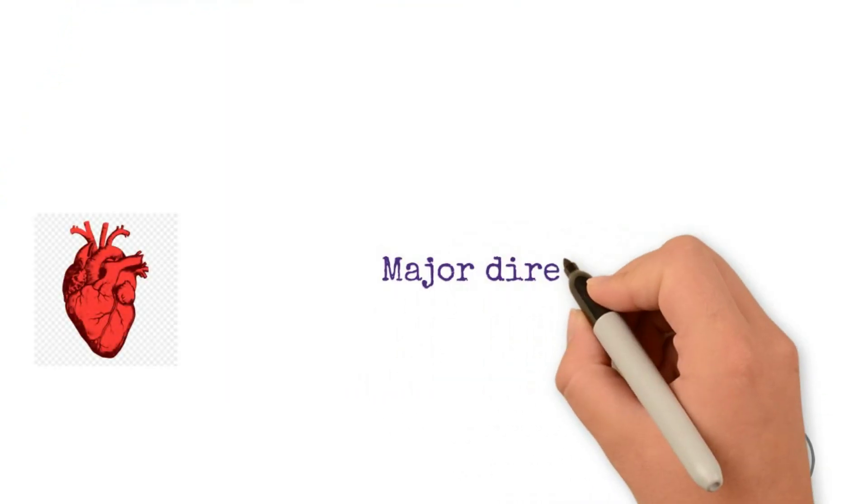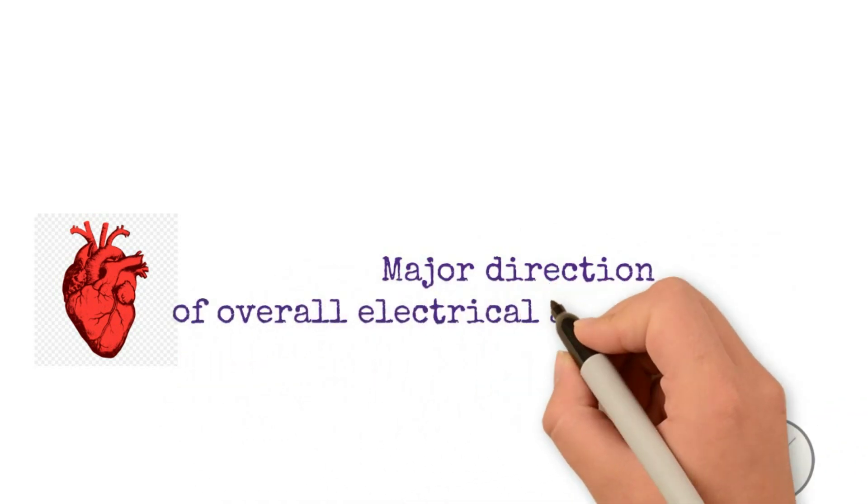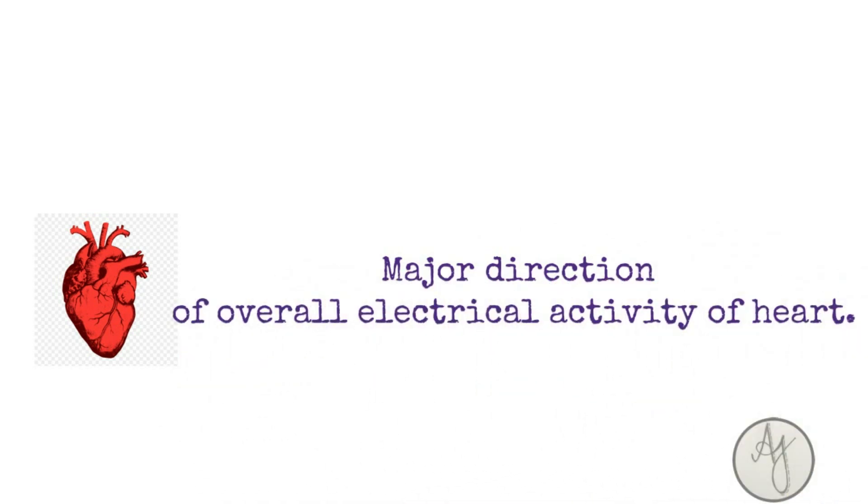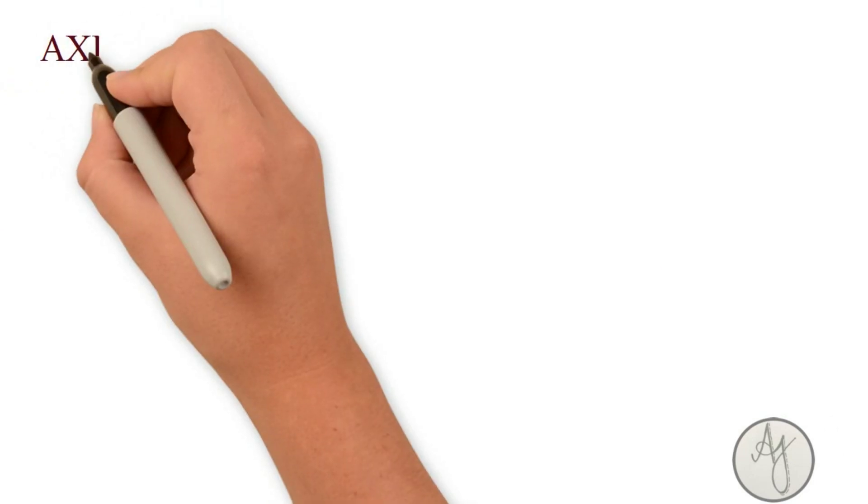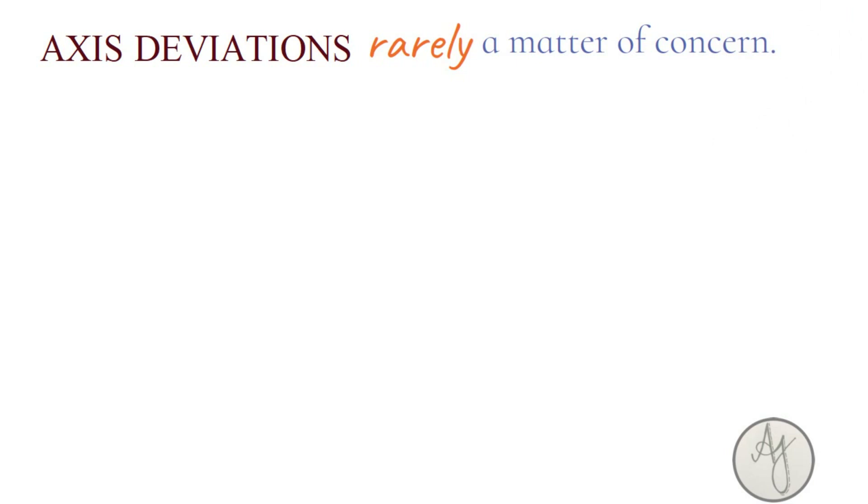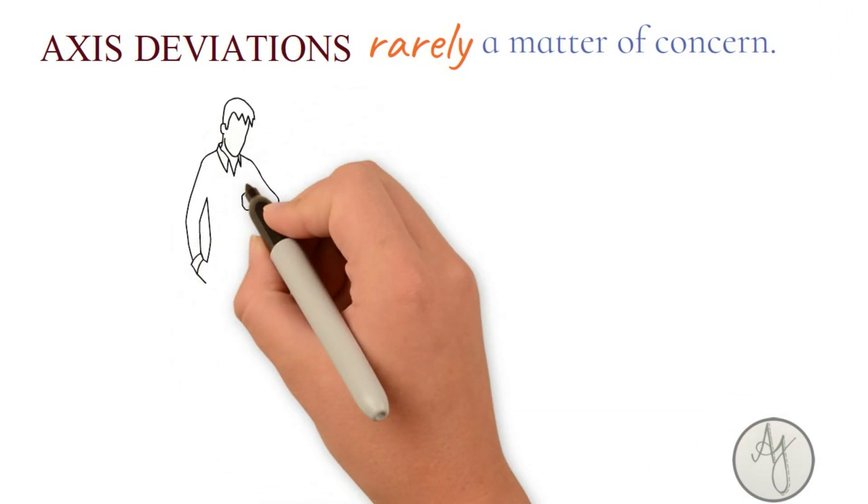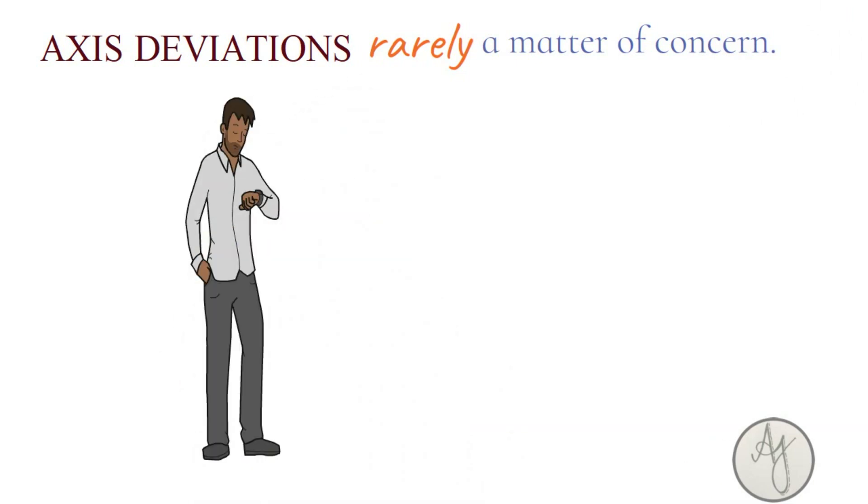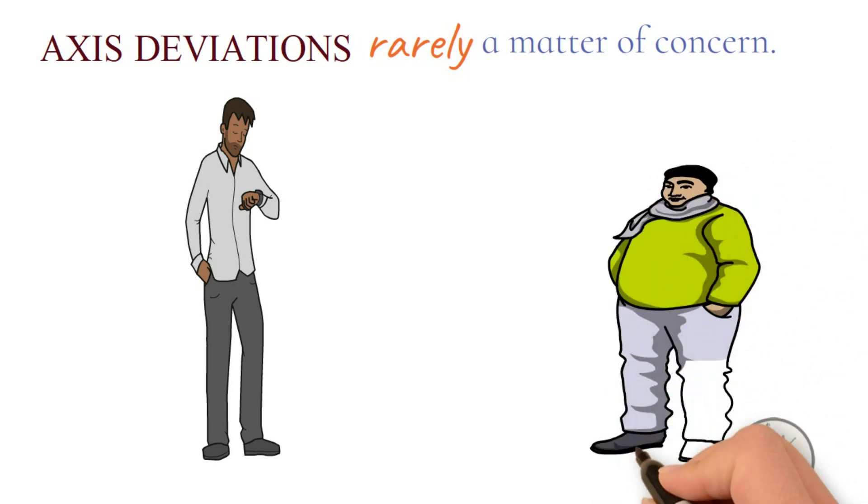But do we always worry about a left and right axis deviation? Mostly not. A little bit of axis deviation is common in tall and thin individuals and in short obese individuals. But should we ignore it altogether?